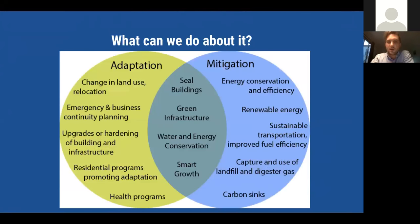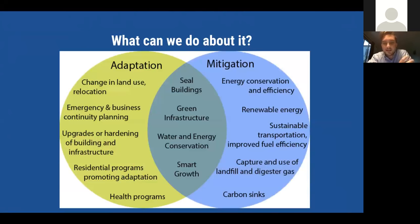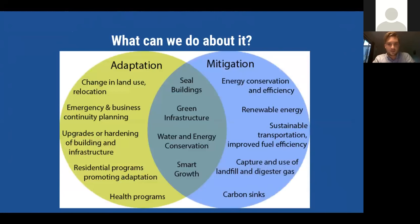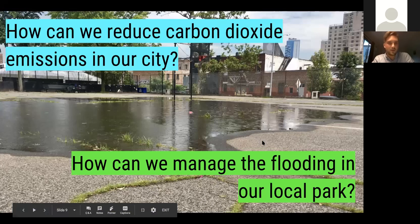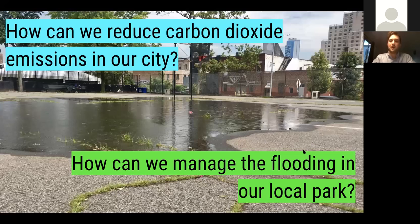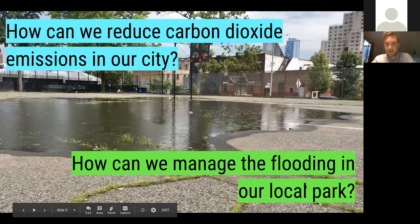What we're not going to talk about a ton is how to teach kids the specific scientific concepts, but more what can we do about it. Broadly, that falls into two categories: there's mitigation — what can we do to lessen human contributions, such as investing in renewable energy, conserving energy, sustainability — and then there's adaptation: how do we adapt to these impacts and risks, and how do we plan for a future where climate change is present? For example, on the mitigation side: how can we reduce CO2 emissions in our city? On the adaptation side: how can we manage flooding in our local park associated with sea level rise?